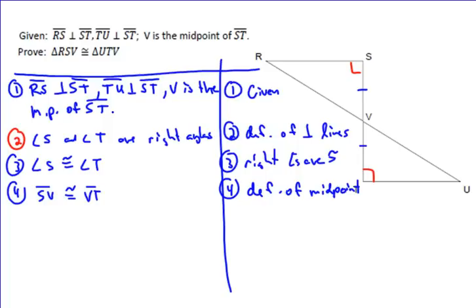Now that I've used at least partially my given statements, I can look and decide which one of these—side-side-side, side-angle-side, angle-side-angle, angle-angle-side, or hypotenuse-leg—do I want to use now?